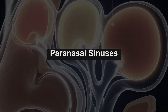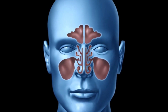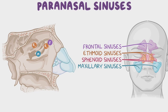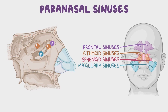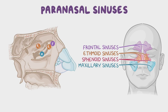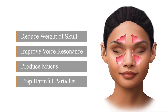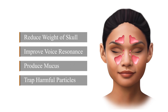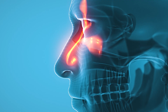The paranasal sinuses are air-filled spaces within the bones around the nose, connected to the nasal cavity by small channels. These sinuses include the frontal sinus in the forehead, the maxillary sinus under the eyes, the ethmoid sinus between the eyes, and the sphenoid sinus behind the eyes. They help reduce the weight of the skull, improve voice resonance, and produce mucus that drains into the nasal cavity. They are lined with the same type of mucus membrane as the nasal cavity, helping trap and remove harmful particles.